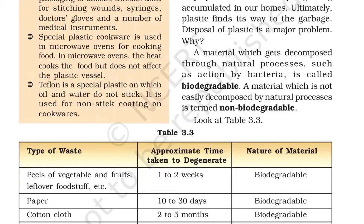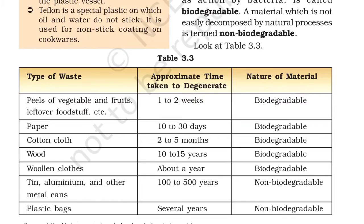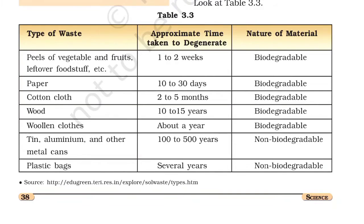Let's look at types of waste and their nature. Peels of vegetables — biodegradable. Paper — also biodegradable, as papers are made from trees. Cotton cloth — biodegradable. Wood — biodegradable. Woolen cloth — biodegradable. However, rayon, silk, and nylon are not biodegradable because they are synthetic fibers and don't easily decompose through natural processes.